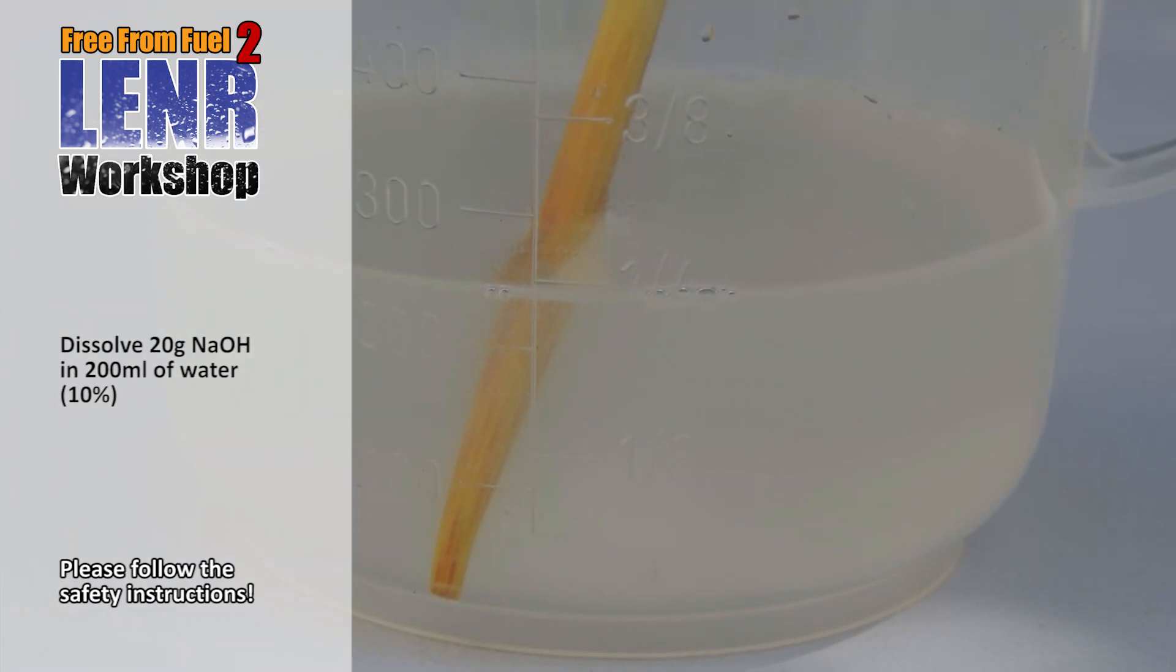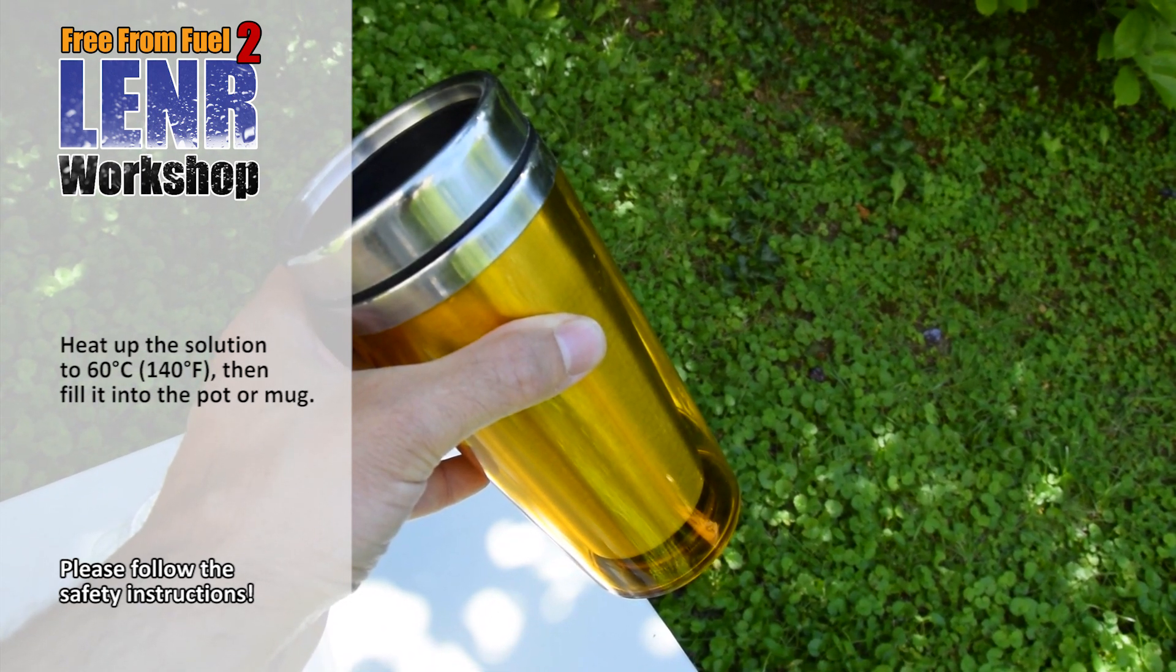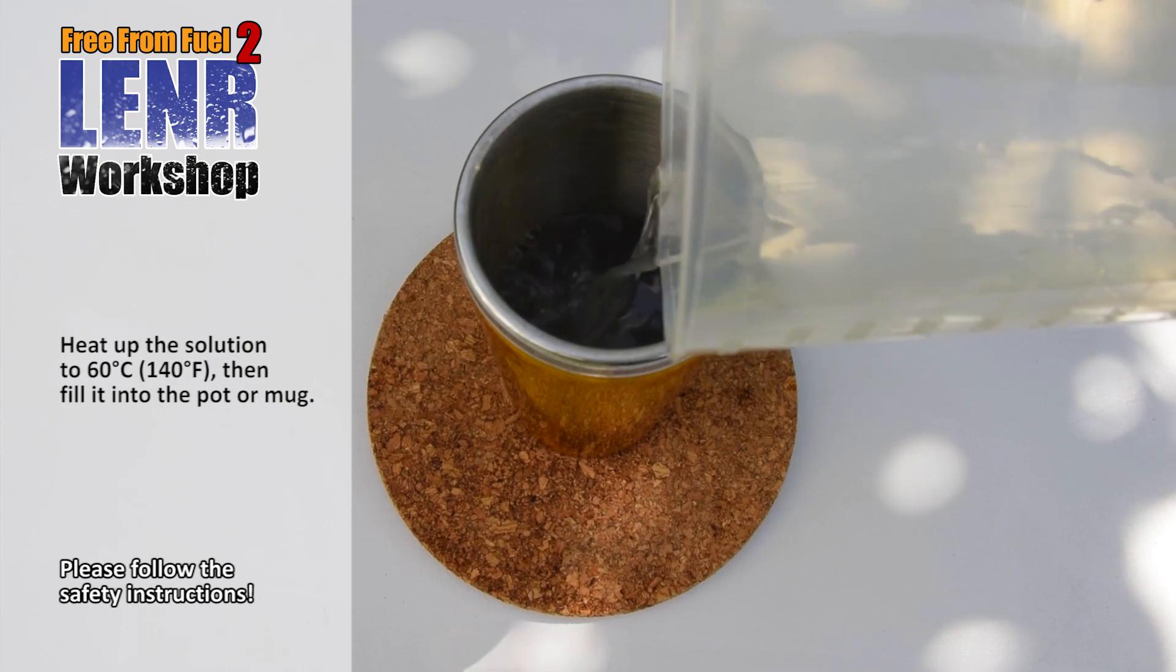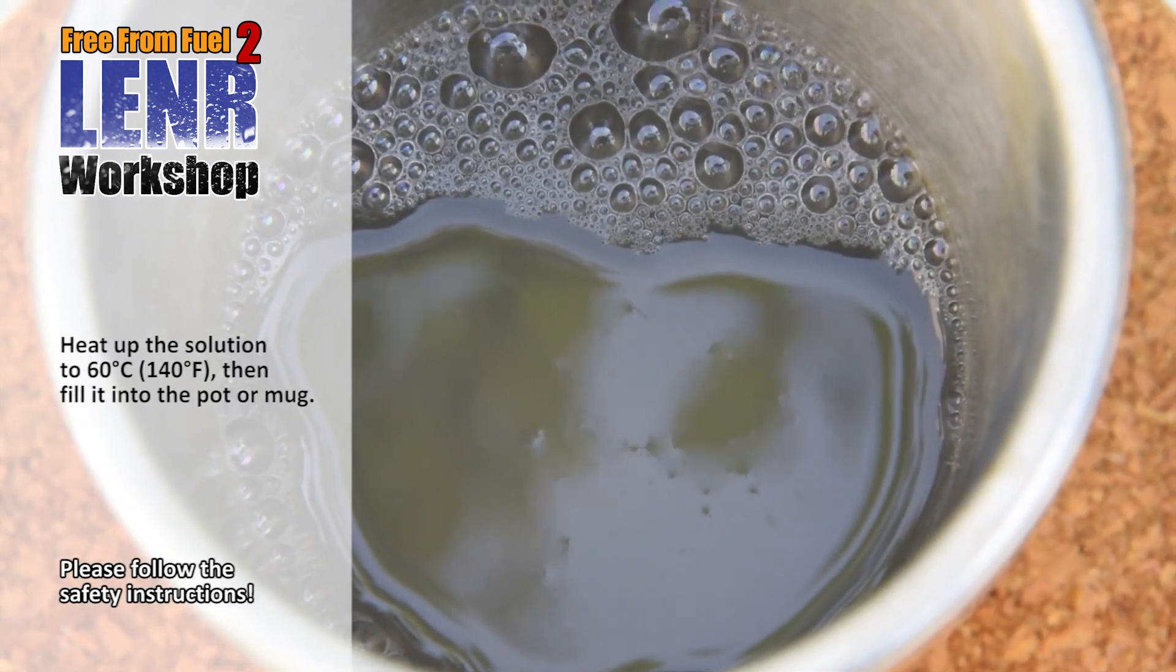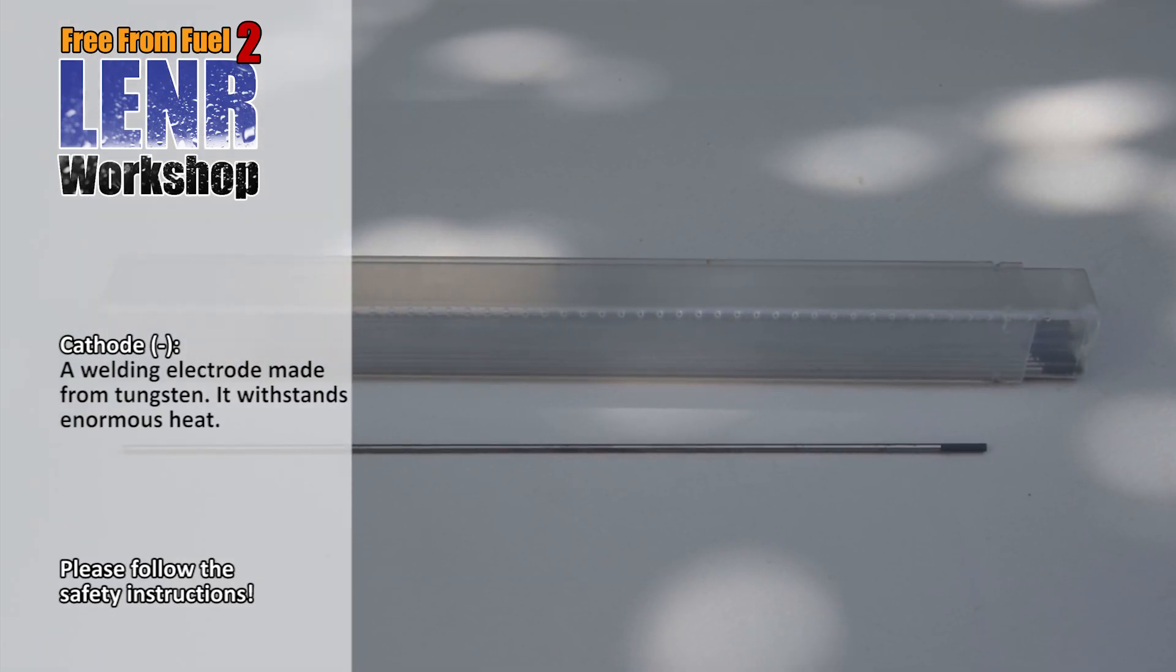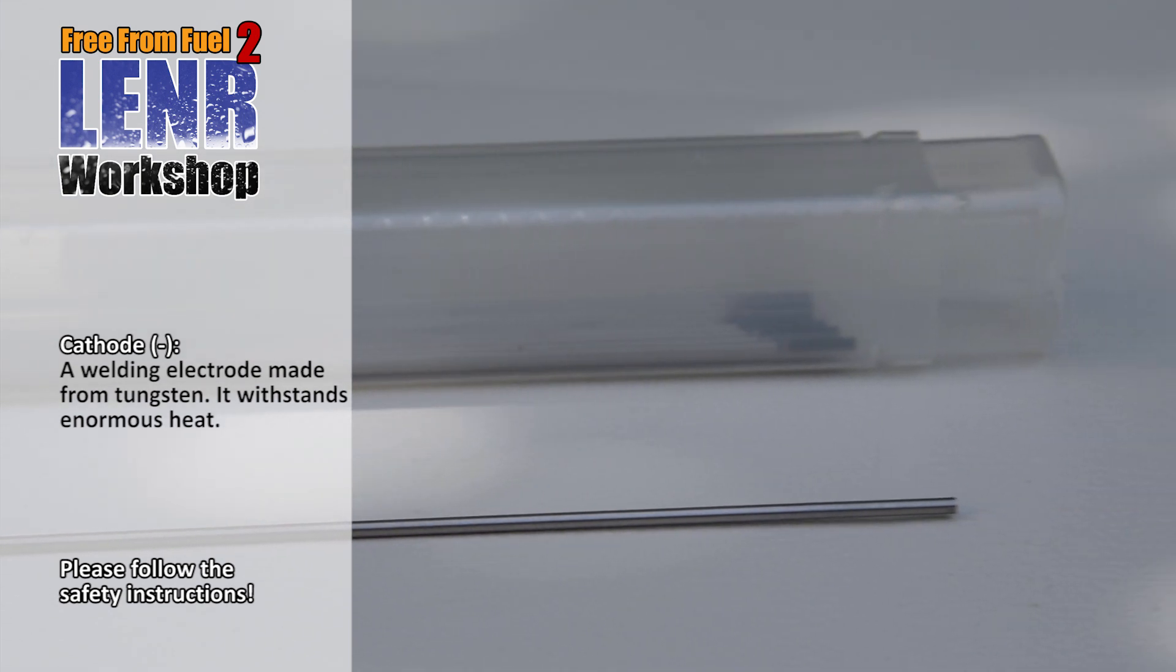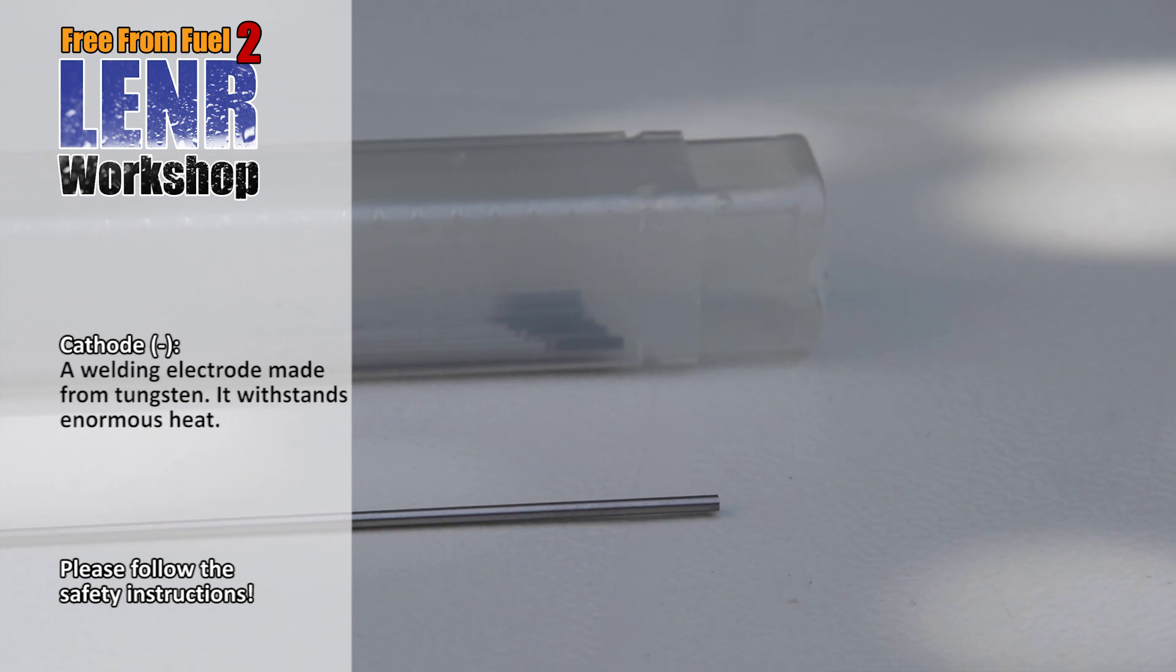Now we need a stainless steel mug or pot. I found this mug for 3 euros. It has double walls that keep the temperature. A stainless steel thermos bottle would be perfect, but the neck would be too narrow for the camera to see inside. Heat up the solution to about 60 degrees Celsius and put the mug onto a fireproof plate. Now we need a tungsten welding electrode. It withstands great heat. The mug walls make a large anode, and the small tungsten tip makes a tiny cathode, so that all the electrons have to go to this small tungsten tip. And that makes an enormous heat.